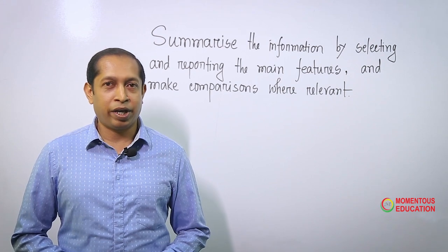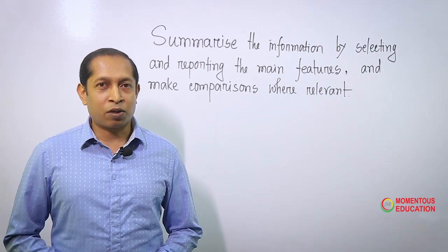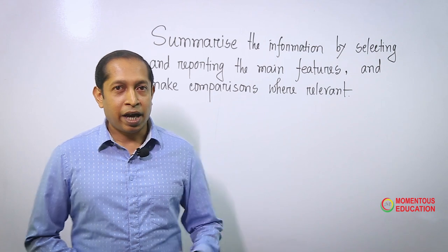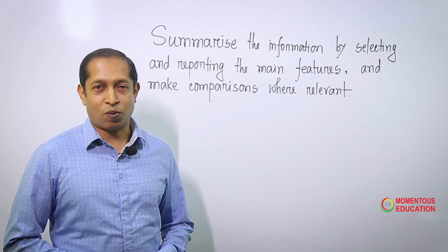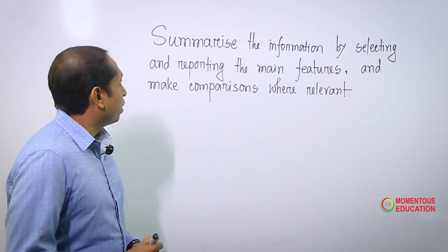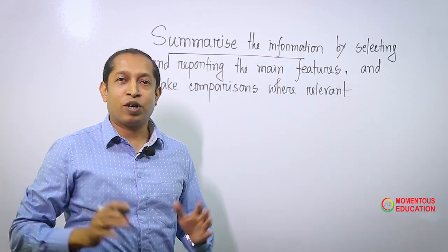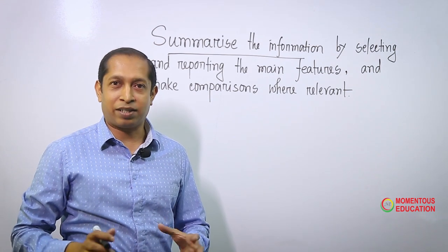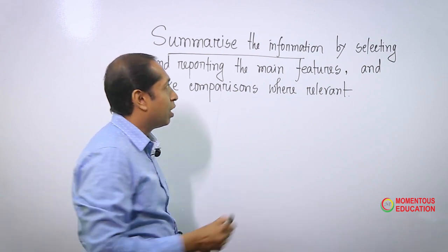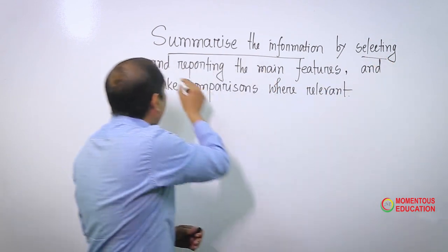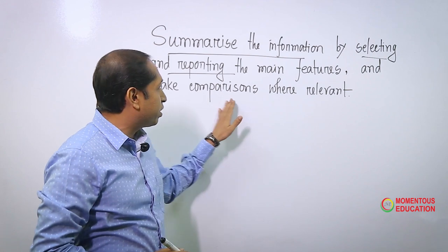Before applying this theory, we have to know about the requirement of Writing Task 1. If we look at 'summarise the information', that means you are not allowed to write everything — all data. You have to make a summary. Not only that, you have to select the information. You have to report the main features, and the other one is make comparisons where relevant.